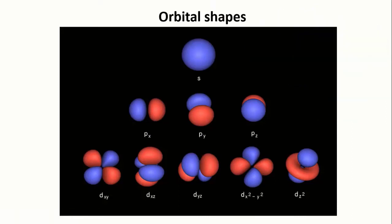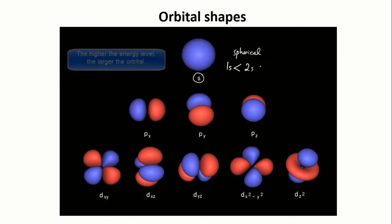So, all s orbitals are spherical. As you go from 1s to 2s to 3s, and so on, for the energy levels that are further away from the nucleus, the size of the sphere increases, meaning the electron spends more time further away from the nucleus.